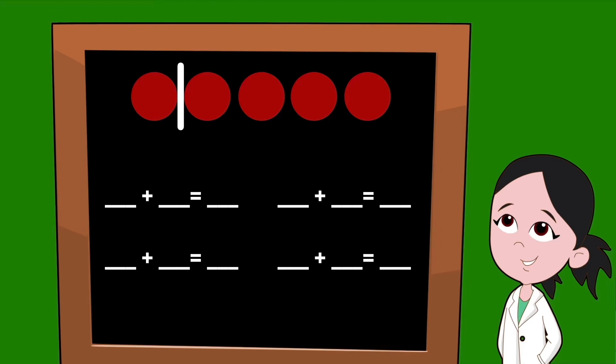One dot on the left means our first partner is going to be one. The number of dots on the right will make our second partner, which would be four. One plus four equals five.